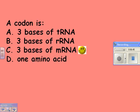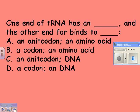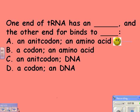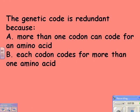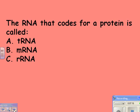A codon is three bases of messenger RNA. An anticodon is three bases of tRNA. One end of tRNA has an anticodon, and the other end binds to an amino acid. The genetic code is redundant because more than one codon can code for the same amino acid.